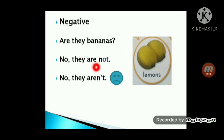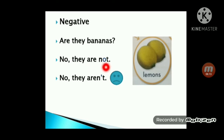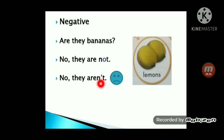They are not. بعد الـno يا صف أول منحط comma — فاصلة. No, they are not. ولما أجي أعملها contraction — أجي أعملها اختصار — تصير: no, they aren't. اختصرت حرفي الـO، عملت له drop وحطيت بداله apostrophe. So صارت: no, they are not أو no, they aren't. لما تكون الإجابة خاطئة بيكون sad face.